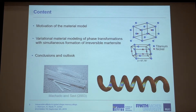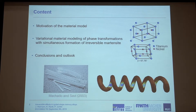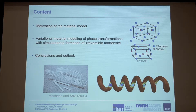Here is the outline of my talk. I will start with a short motivation. I will show you what shape memory alloys are and what problems we have, because we have transformations from austenite to martensite, and these transformations result in material properties which make them very attractive for industrial applications, for example, presented here for stents. After the motivation, I will present the variational material model which couples phase transformations with the formation of irreversible martensite, and in the end I will give an outlook of this talk.